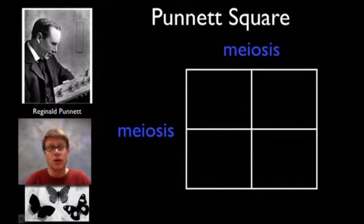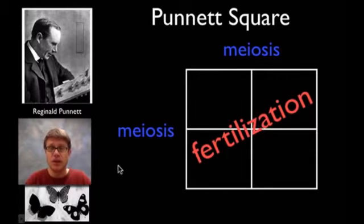If you could remember one thing from this whole video, it's this: The two sides of a Punnett square represent the alternatives after meiosis. In other words, you have a bunch of genes and you give half of those genes to a sperm or an egg, and that happens through meiosis.